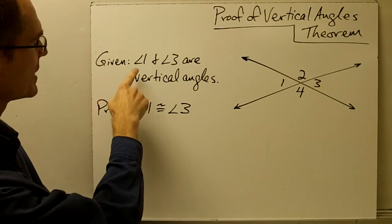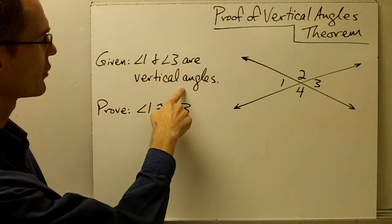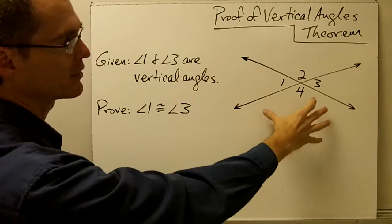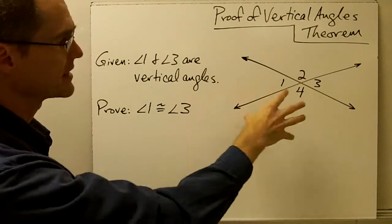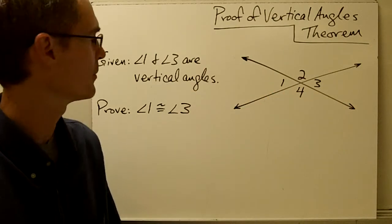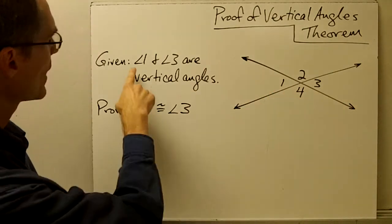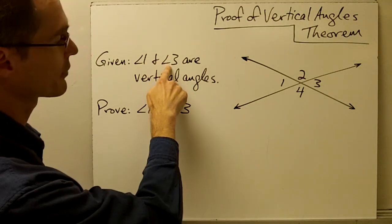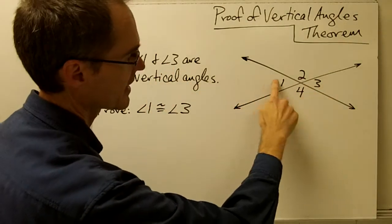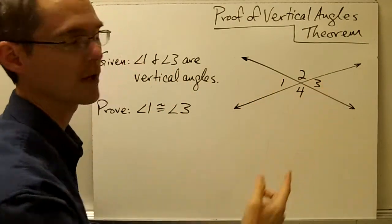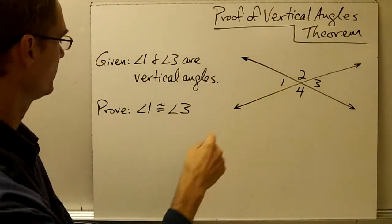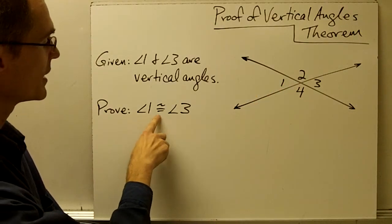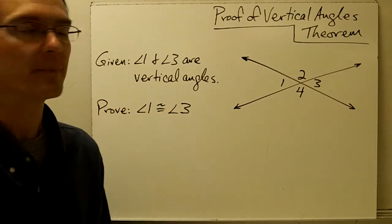Our given statement is: angle 1 and angle 3 are vertical angles. Notice we also have a picture over here — the picture is also considered to be given information. I can see that angles 1 and 3 are vertical angles in my picture. And I want to prove that angle 1 is congruent to angle 3.